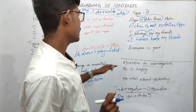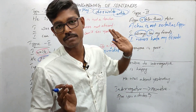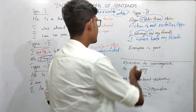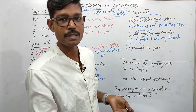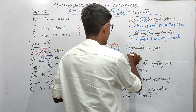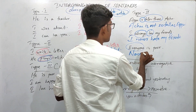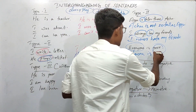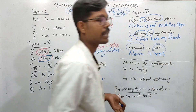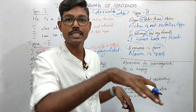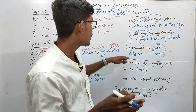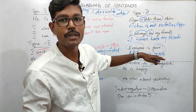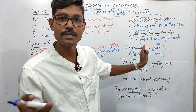Simple example: 'Everyone is poor.' Everyone — what is negative? No one. So: 'Everyone is poor' becomes 'No one is rich.' Everyone is poor — no one is rich.